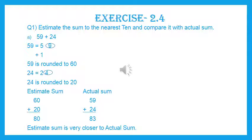Same way, we do the round off of 24. The 1's place digit is 4, which is less than 5, so we need not add 1. So 24 is rounded to 20. Now we find the estimate sum — we add the rounded numbers: 60 plus 20 is 80. So this is the estimated sum.